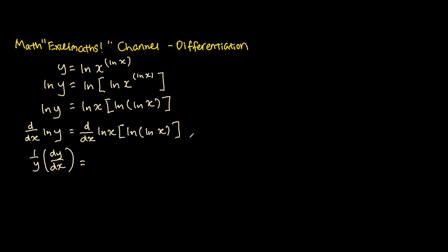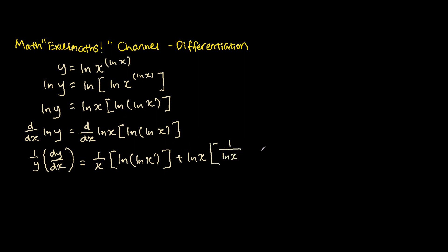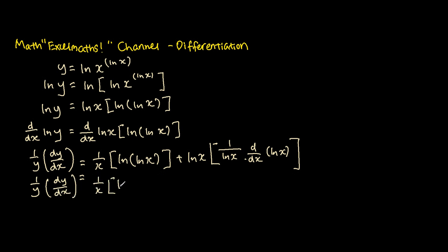For the right-hand side, we apply the product rule. We differentiate ln x and keep the second term: the derivative of ln x is 1 over x, and we keep ln(ln x). Then we add the term where we keep ln x and differentiate ln(ln x), which gives 1 over ln x, times the derivative of ln x, which is 1 over x.